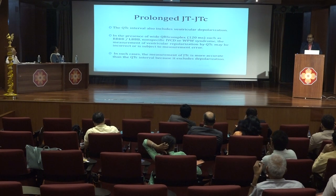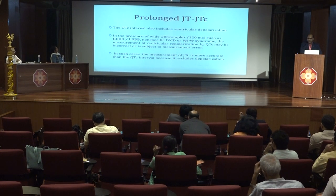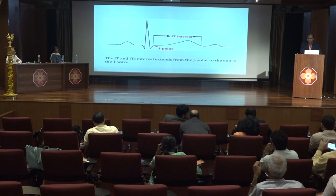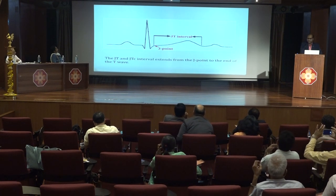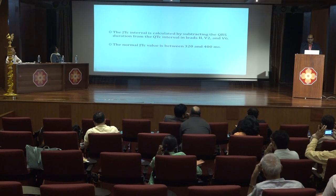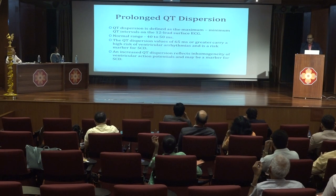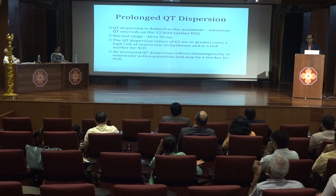In the presence of wide QRS complex such as RBBB, LBBB, WPW, or non-specific IVCD, measurement of ventricular repolarization by QTc alone will be incorrect and subject to measurement errors. In these patients, the JTc interval should be used instead — measured from the J point to the end of the T wave — with a normal JTc interval of 320 to 400 milliseconds. Prolonged QT dispersion of more than 65 milliseconds is a high-risk marker for ventricular arrhythmia and sudden cardiac death.